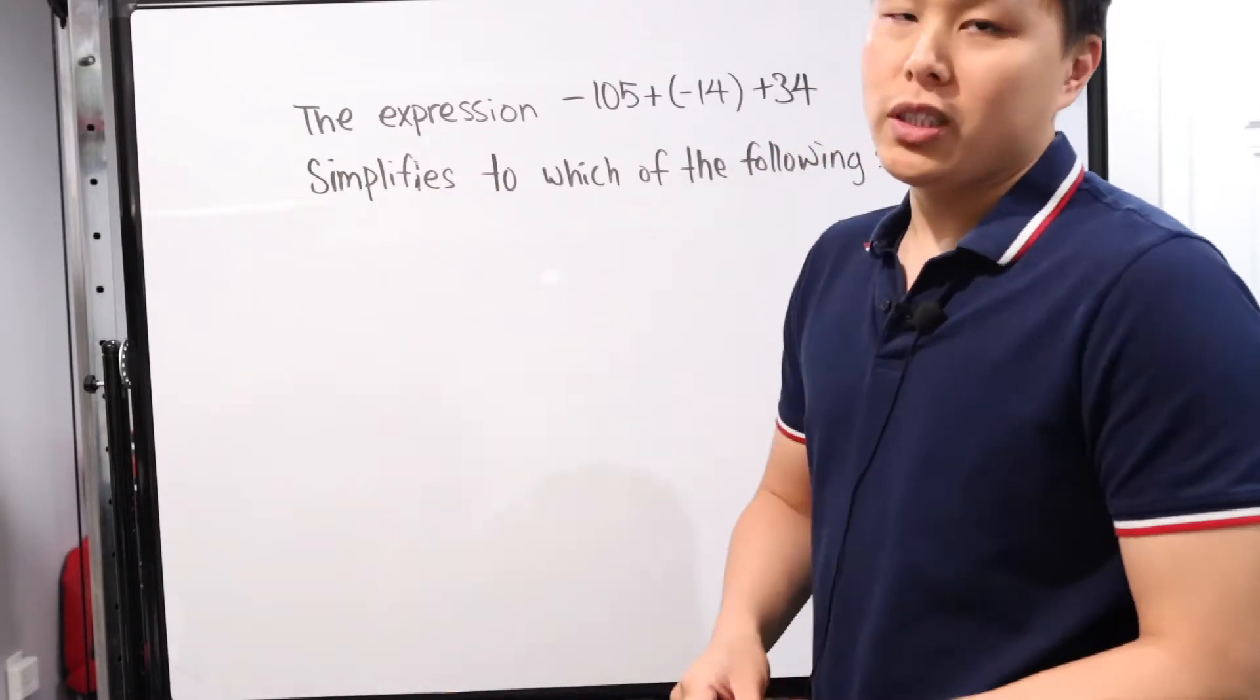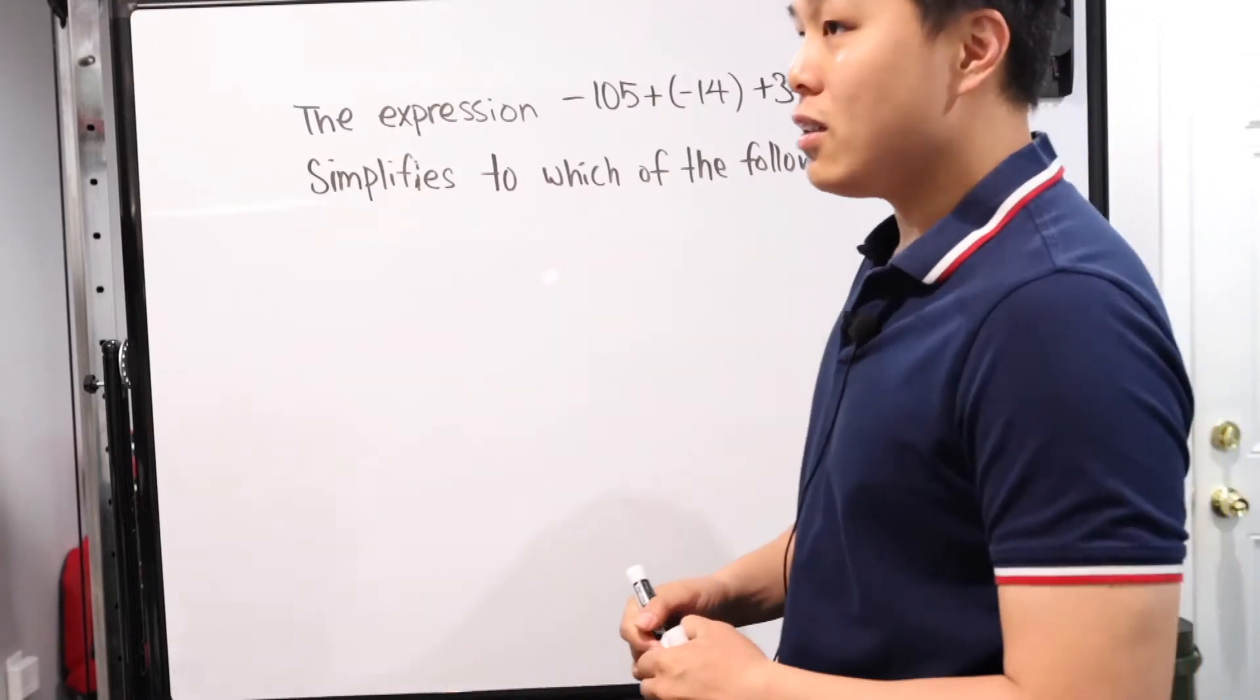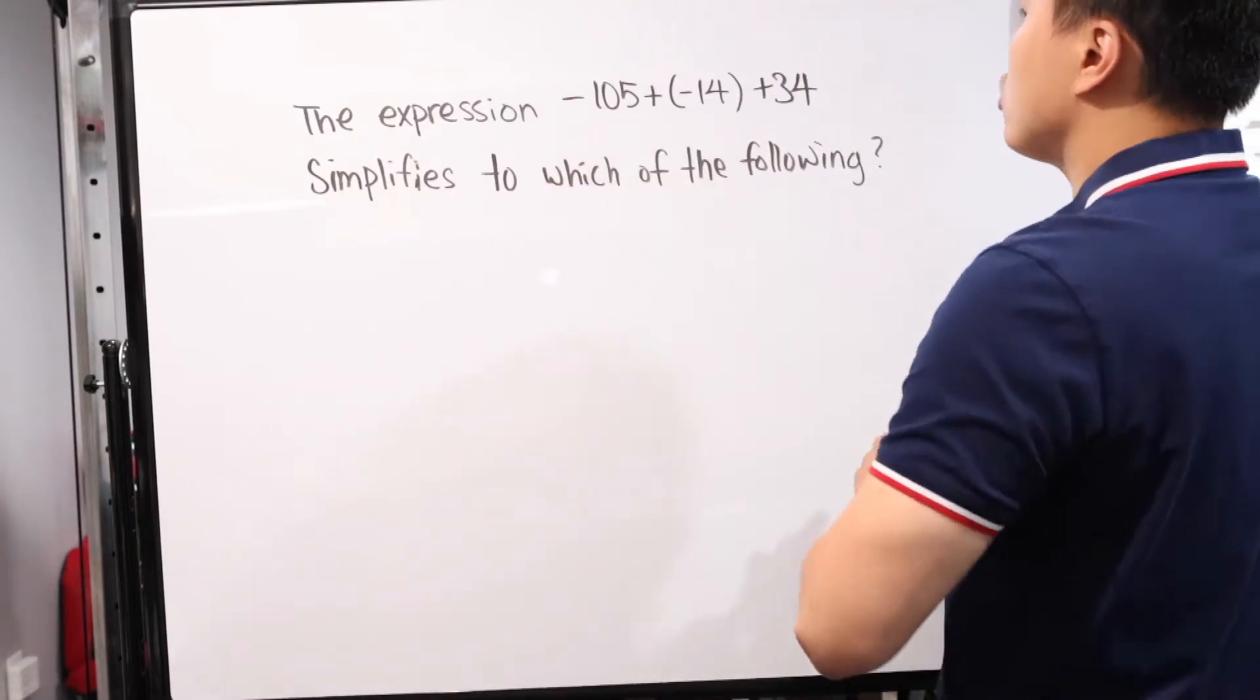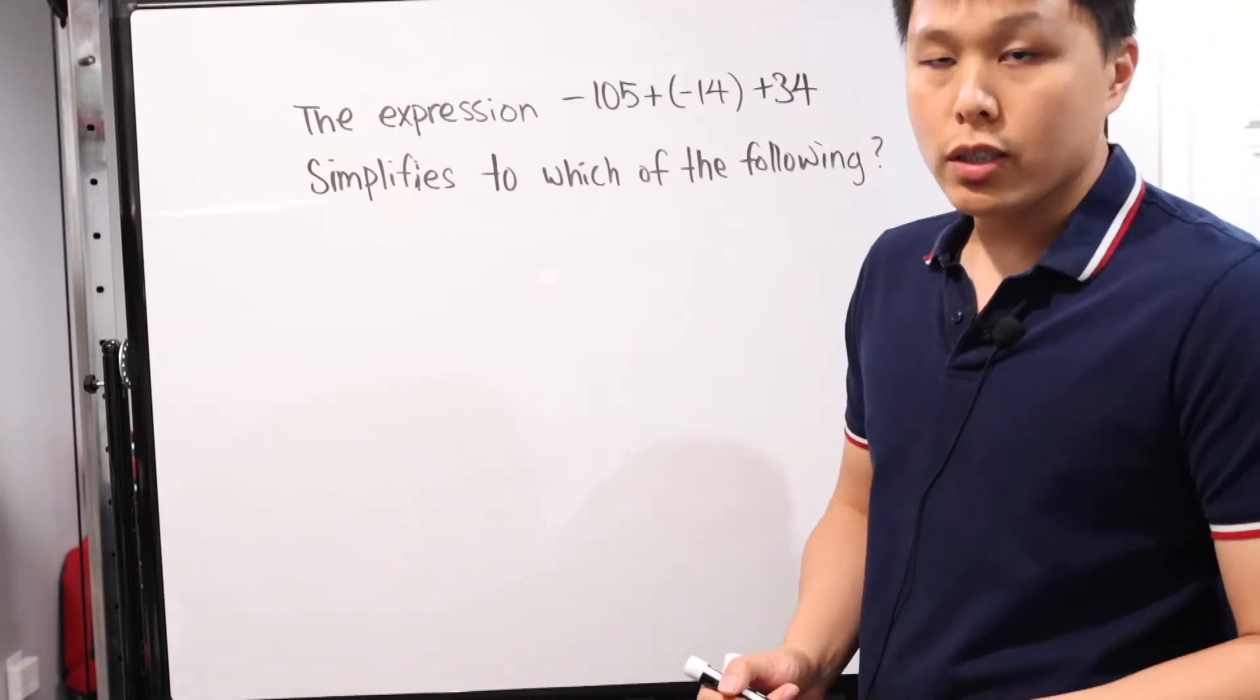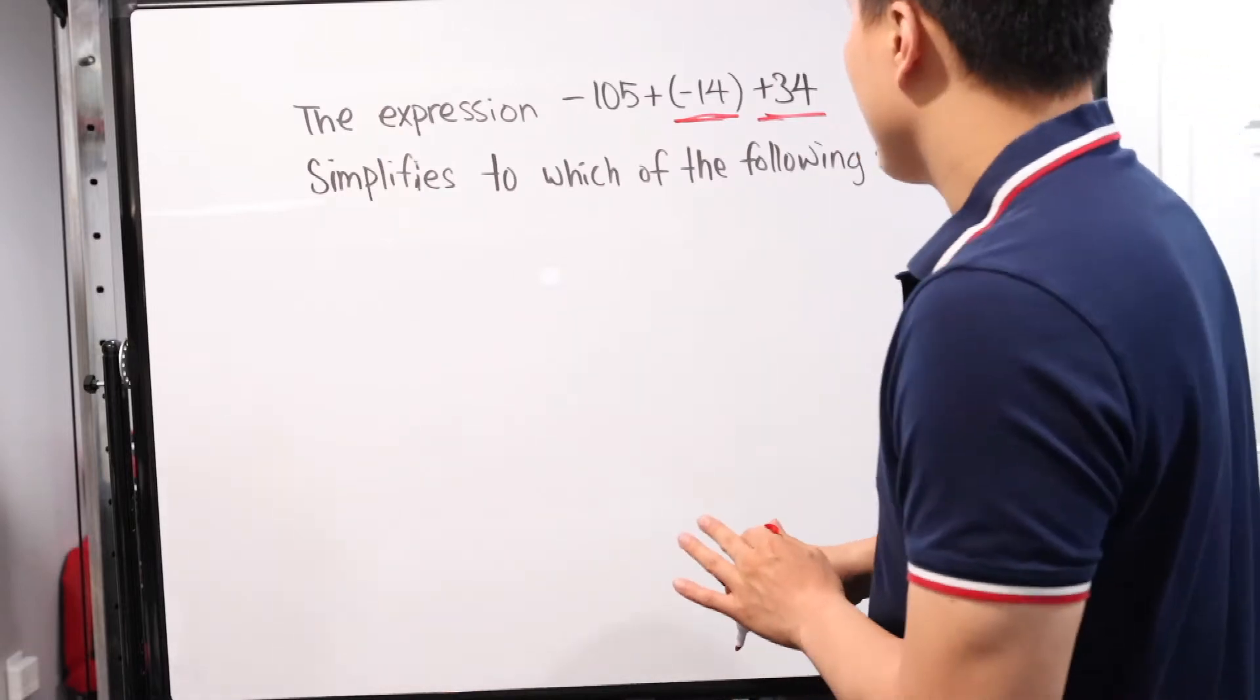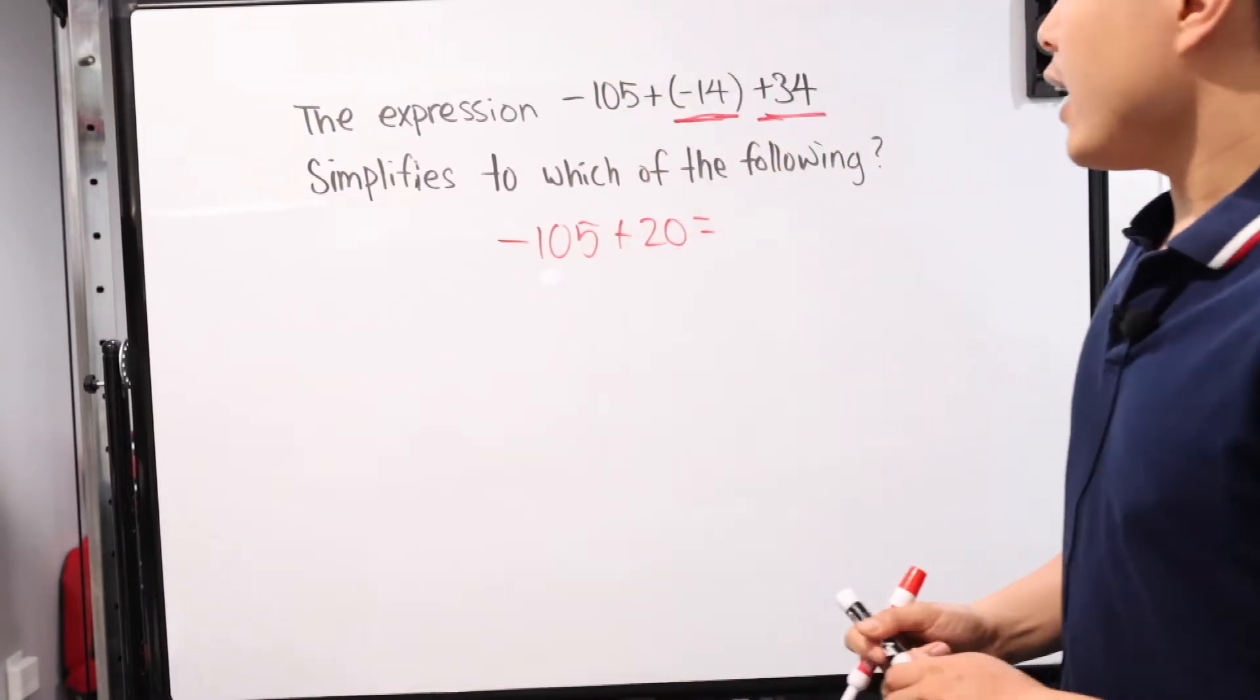Which of the following, they do give you multiple choice. I'm not going to write the multiple choice because this is a fairly simple problem we can solve without looking at the potential choices. We're just trying to add all of these sides together. We have negative 105, negative 14, and then 34. The thing I've noticed is if you combine negative 14 plus 34, it makes it a little more simple because the one four cancels and you have basically a plus 20 left.